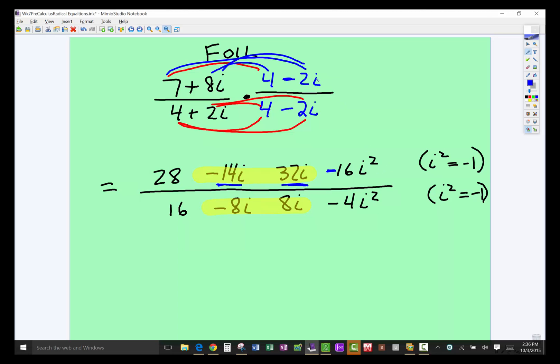Remember, i squared is equivalent to negative 1. So when you multiply negative times negative, that will end up being a positive.